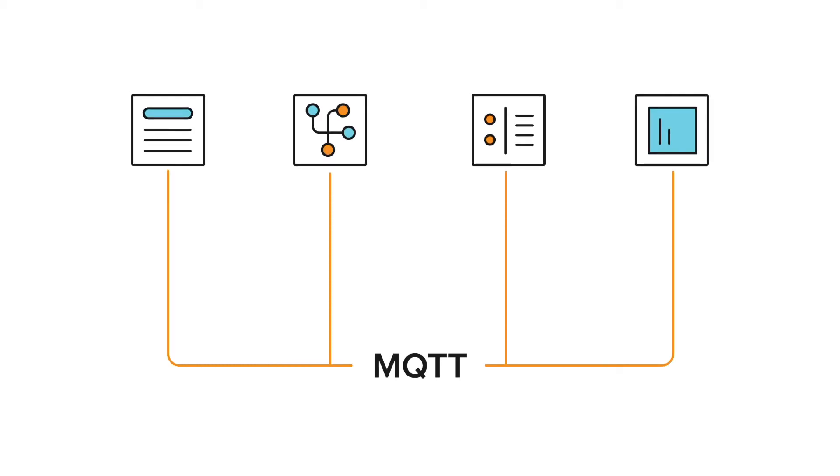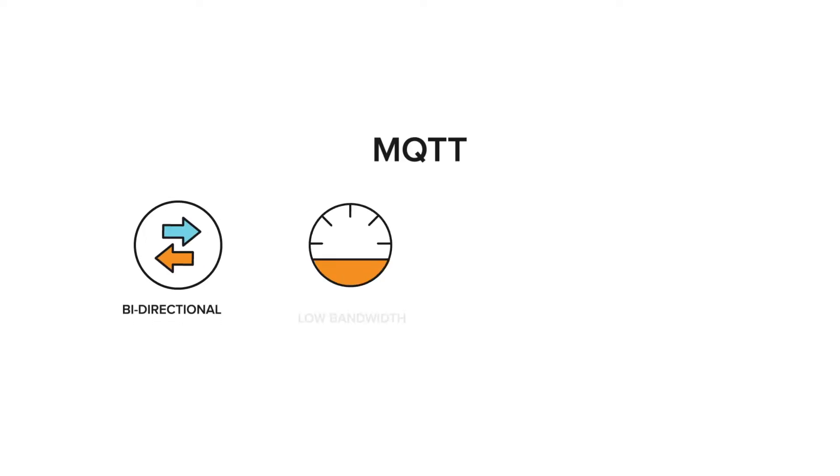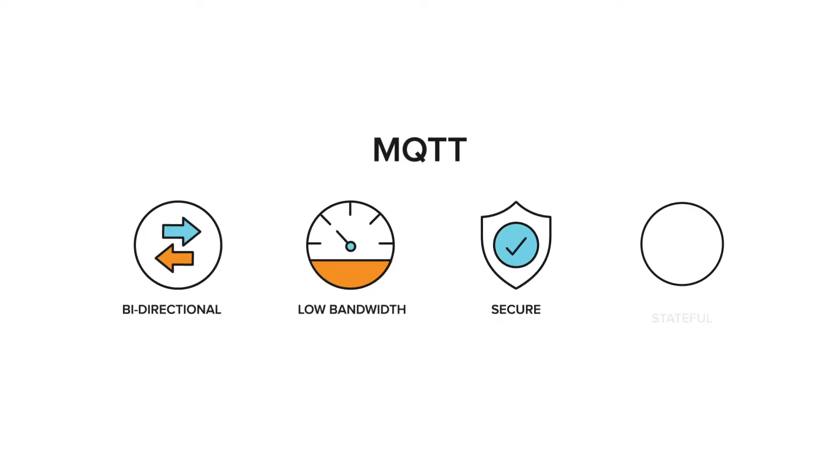Let's start by looking at the device level. To get the devices talking to each other, you'll need MQTT, the industry standard data transfer protocol for machine-to-machine communication. Like HTTP is a protocol for transmitting data across the internet, MQTT does the same thing for the Industrial Internet of Things. In fact, MQTT was invented for the industrial space. It's bi-directional, low bandwidth, secure, and stateful, so you know you can trust the data.